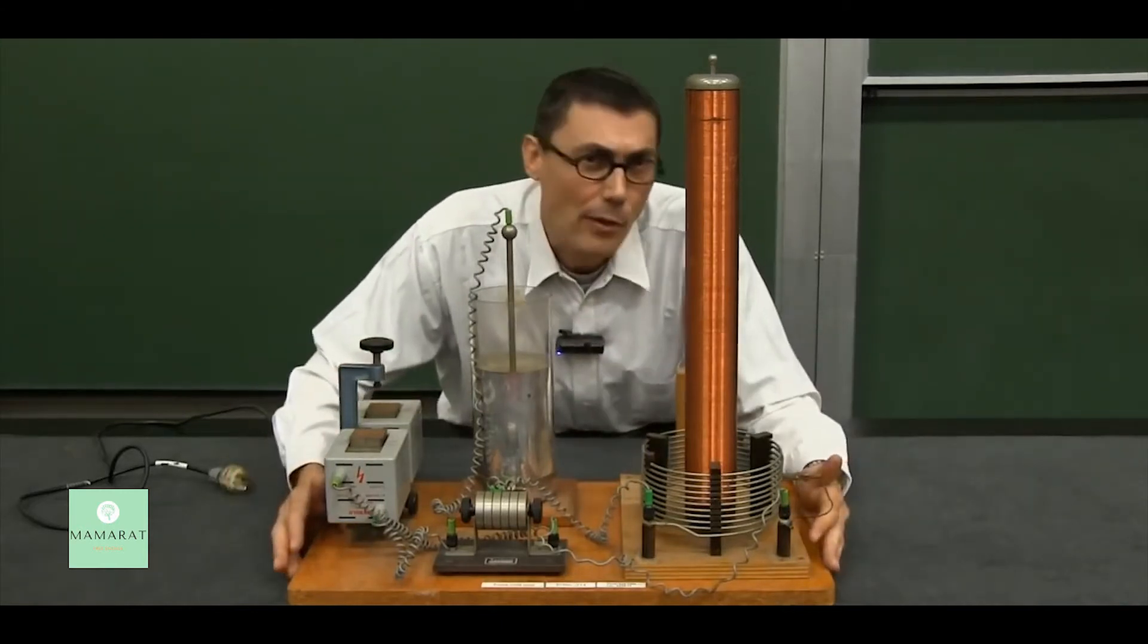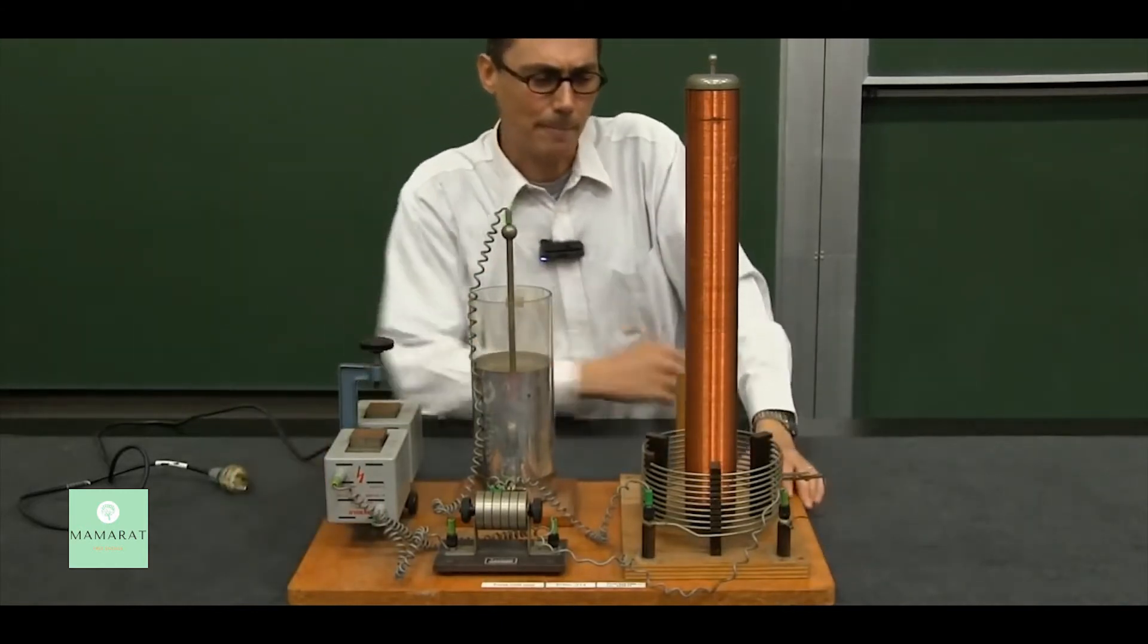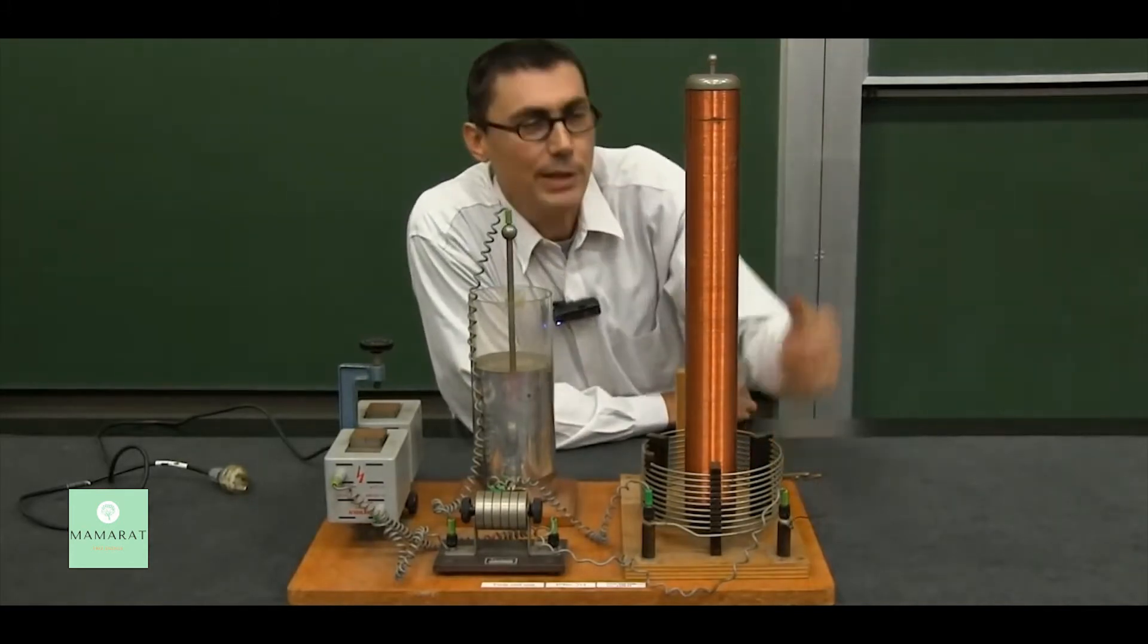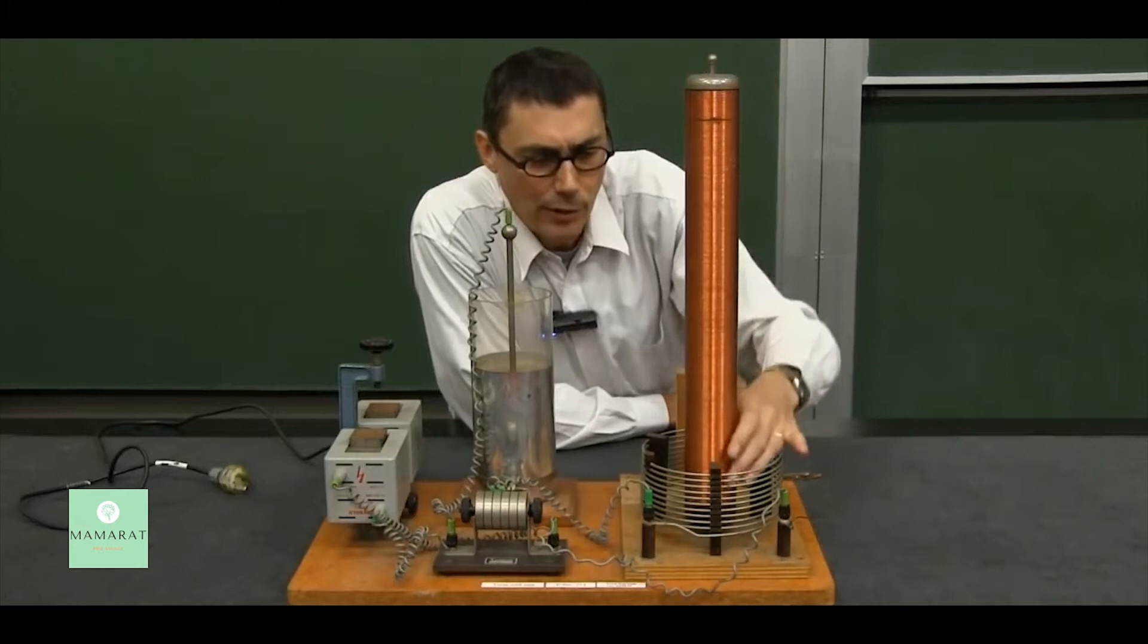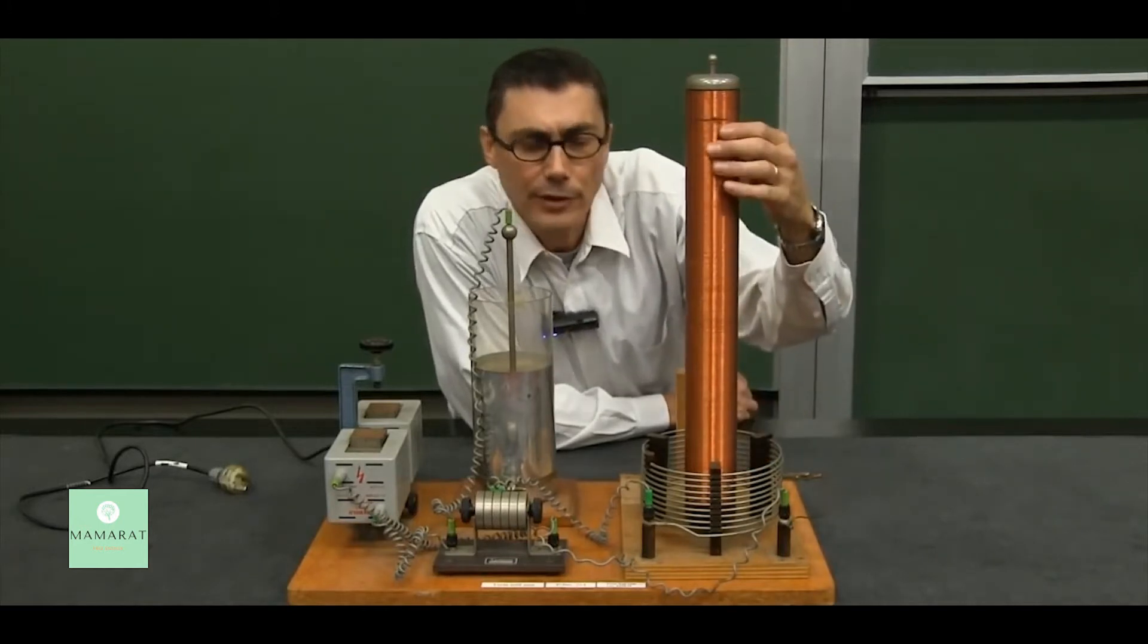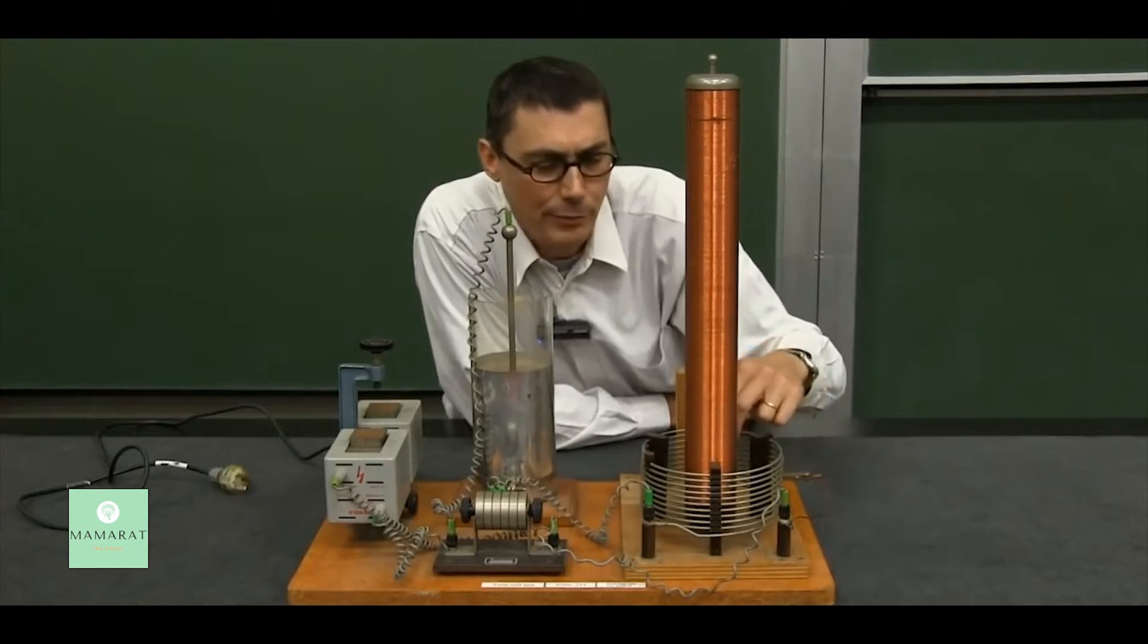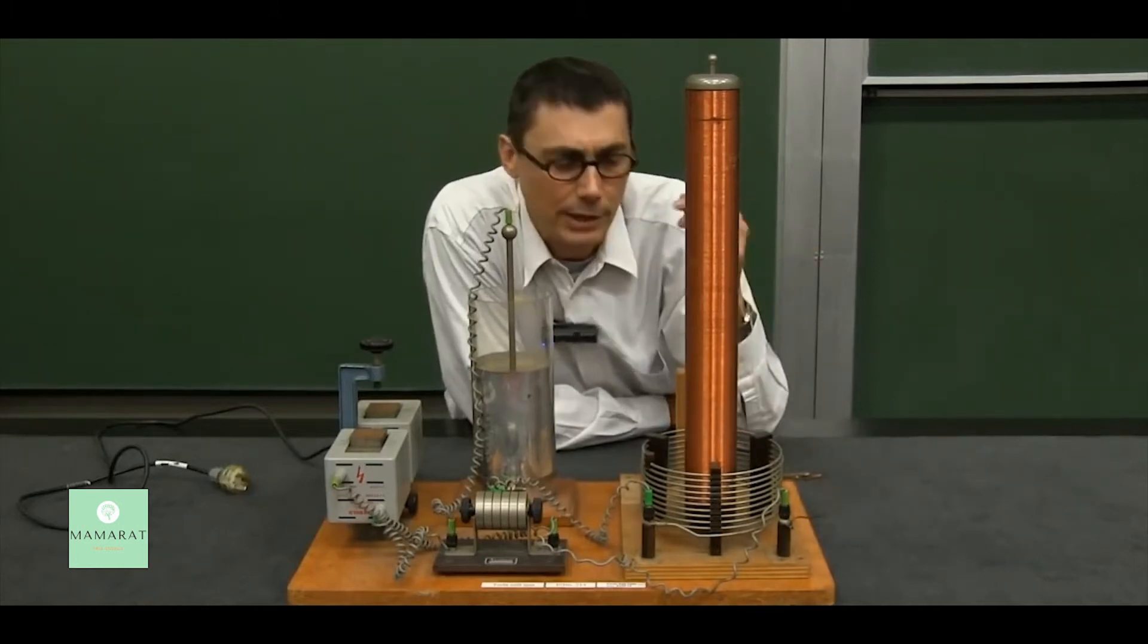This is a Tesla coil with its clothes off so you can see what the bits look like. Now the business end of the Tesla coil essentially is just a transformer. You can see I've got a secondary coil consisting of a lot of turns and a primary coil consisting of a small number of turns. So big turns ratio gives you a big voltage.